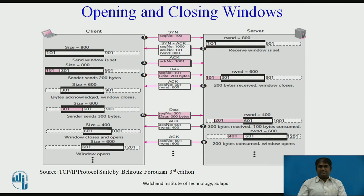In segment 7, the server acknowledges the receipt of data and announces that the window size is 400. When this segment arrives at the client, the client has no choice but to reduce its window again and set the window size to the receiver window value of 400 advertised by the server. Segment 8 is also from the server after its process has pulled another 200 bytes; its window size increases and the new receiver window is now 600. The segment informs the client that the server still expects byte 601 but the server window size has expanded to 600. The sending of this segment depends on the policy imposed by the implementation.